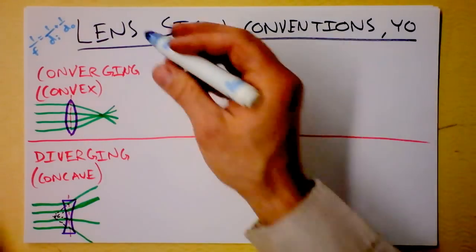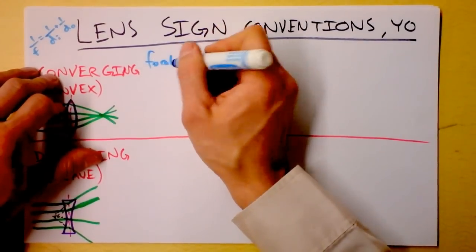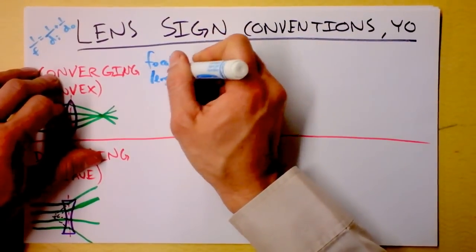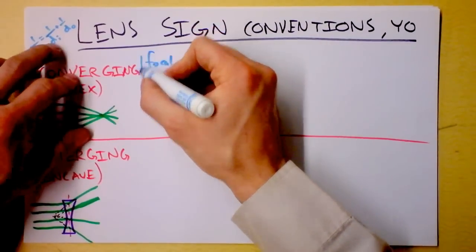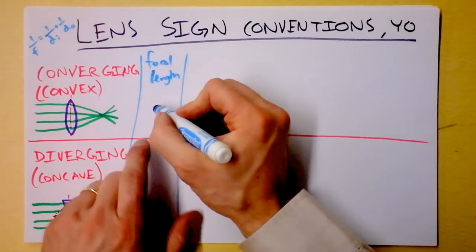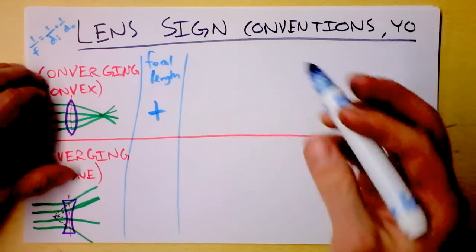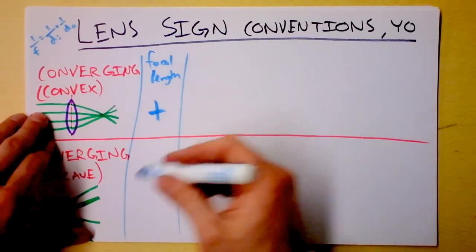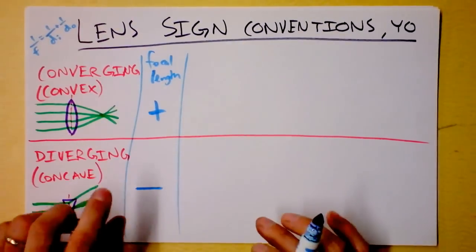So the first thing I want to talk about is focal length. And I'm going to say that for focal length, for a converging lens, we're going to have focal length positive. And for a diverging lens, we're going to have focal length negative. I suppose that's reasonable.